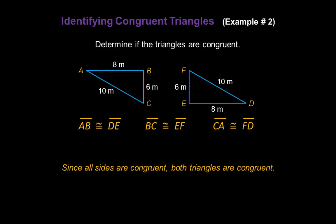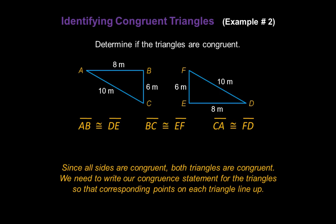Now since all the sides are congruent, that means that both triangles are congruent as well. We're going to write a congruent statement for both triangles, but we need to write our congruent statement for the triangles so that corresponding points on each triangle line up.